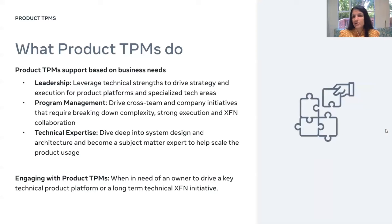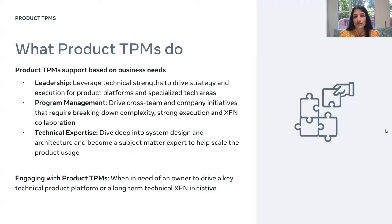The first type is Product TPMs. There are primarily three different axes on which they support based on different business needs: leadership, program management, and technical expertise. These three axes define all the work that Product TPMs do. They use their technical strengths to work with leadership internally within the team as well as externally to understand product strategy and goals, while also applying strong program management skills across multiple teams and products.